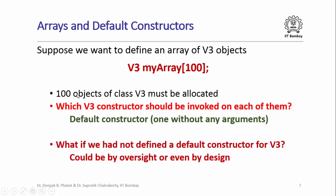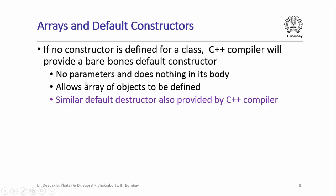What if we had not defined a default constructor for V3? If you have not defined any constructor for a class at all, the C++ compiler will provide a bare-bones default constructor — it has no parameters and does nothing in its body. This allows you to define an array of objects, since the compiler-provided default constructor can be invoked on each element. Similarly, if you have not provided any destructor, the compiler provides a bare-bones default destructor with no parameters that does nothing.